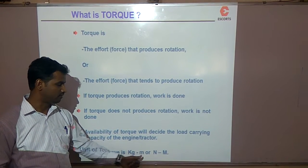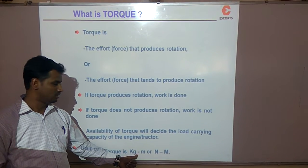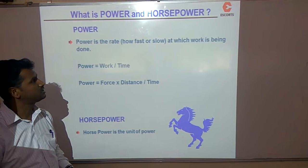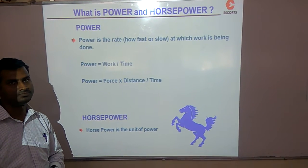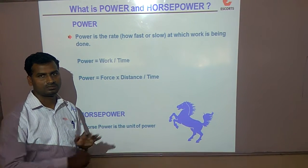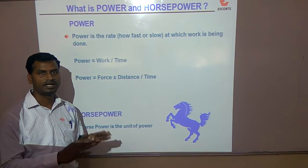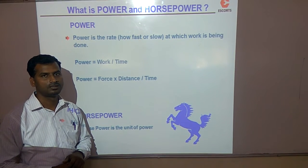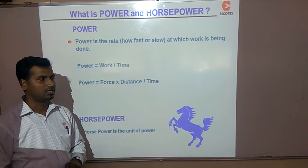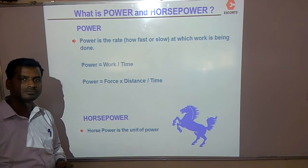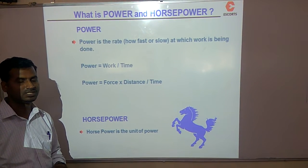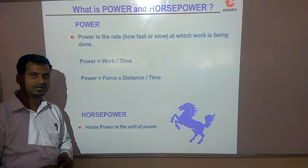The force indicates kg and meter indicates distance. Next is power. Power is the speed of doing work — the rate of doing work. Work done divided by time is power. Horsepower is the unit of power. Let us understand some background about this word horsepower.